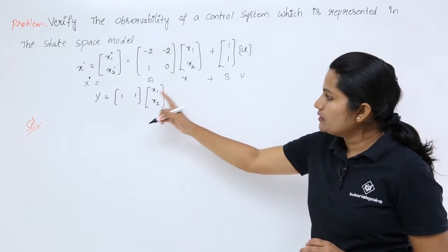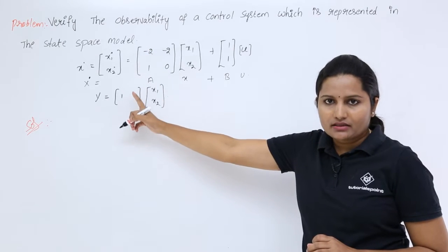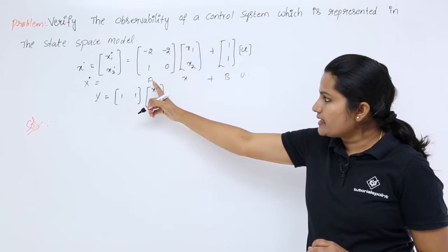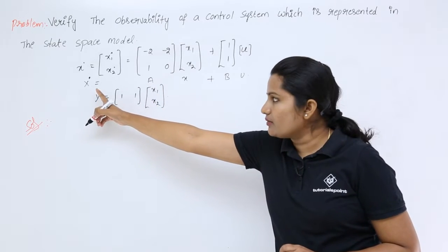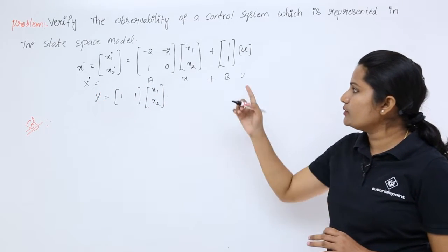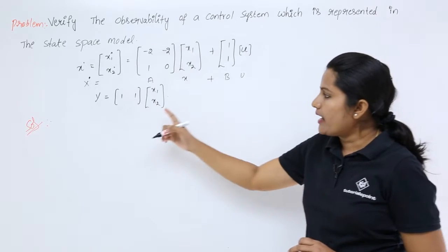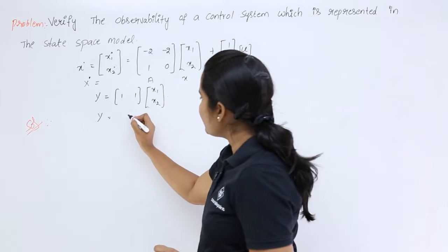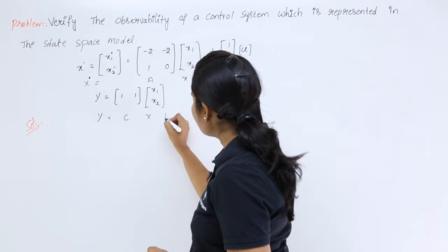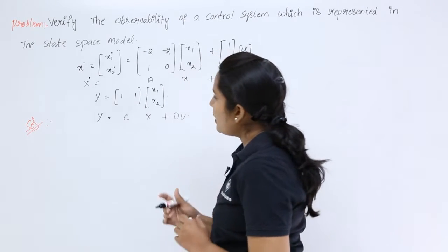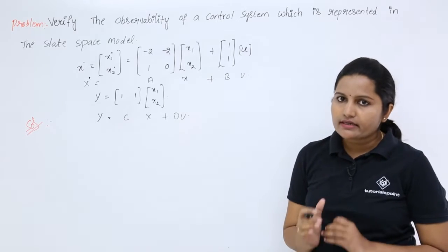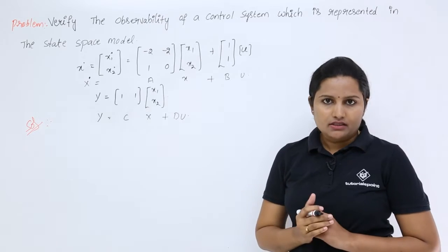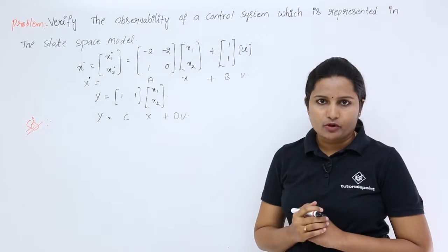Here we have the state equation and the output equation. The standard state equation is x-dot = A·x + B·u, and the standard output equation is y = C·x + D·u. By comparing this standard state model with the given state model, we can get the solution for the given problem.